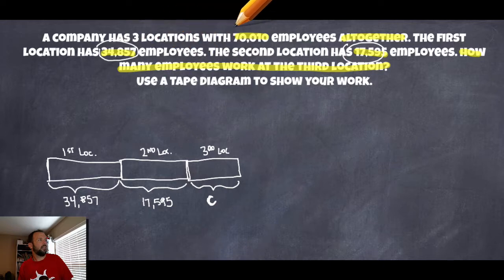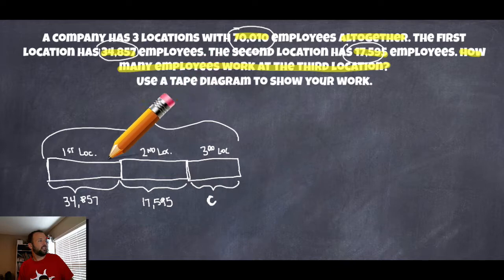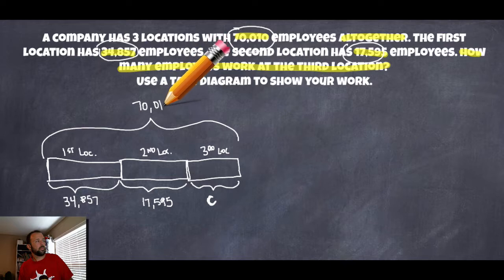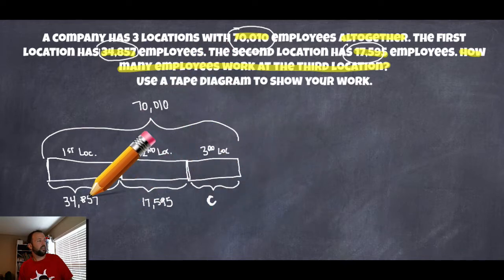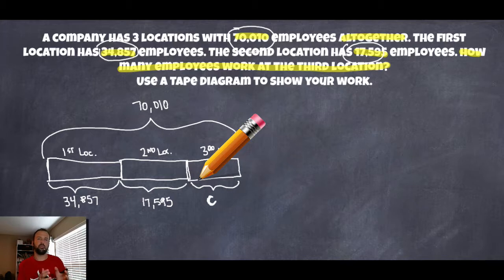We do know that there are 70,010 employees in total. So if I drew a big bracket here, I would know that these three locations add up to 70,010. So I've got my three locations, the first two numbers, and the third one labeled C that I'm still looking for. Take a look at your tape diagram and see if you have something similar, or how it relates — maybe it's a little different, and that's okay, as long as you have those numbers in there.